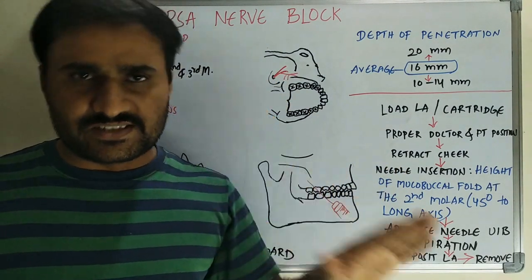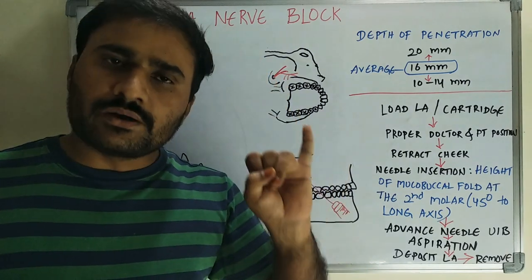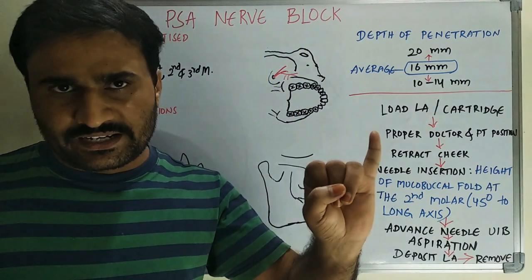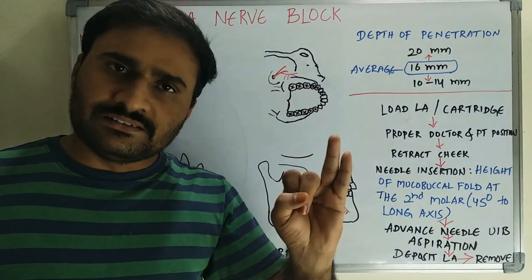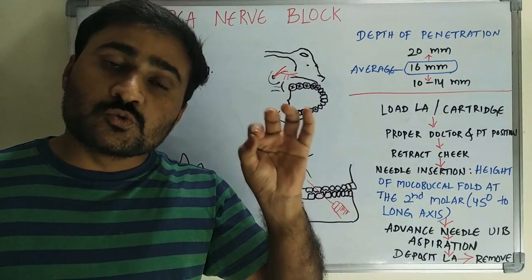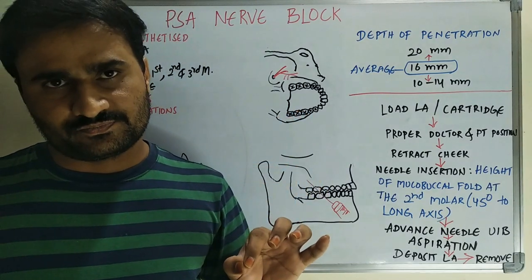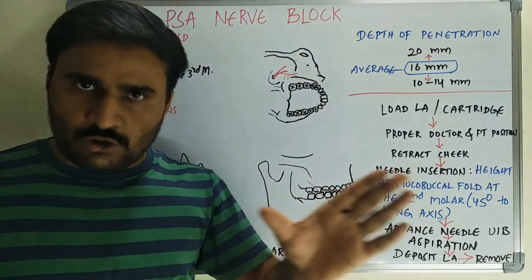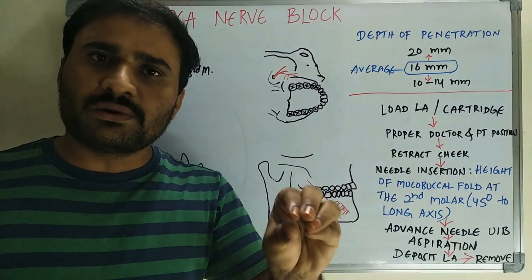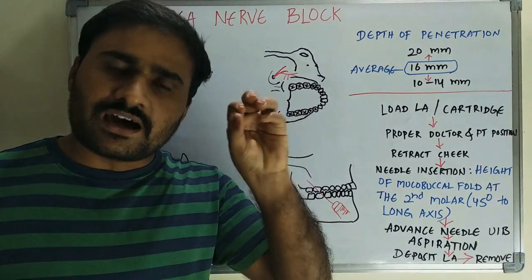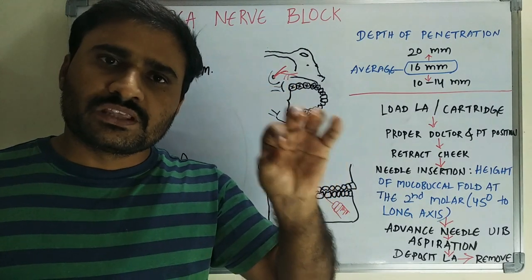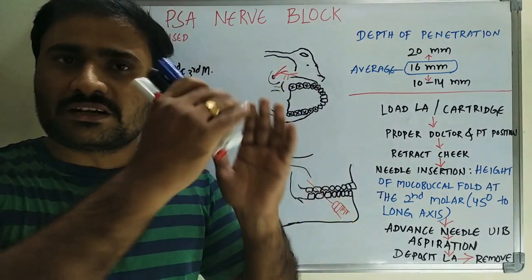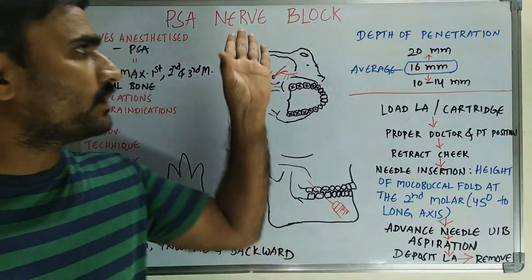The indication for a nerve block is when you want to perform a procedure on more than two teeth, and the second indication is when there is a contraindication to the supraperiosteal injection, like infiltration. In those cases you will go for a nerve block. Contraindication is when there is infection or abscess formation in the supraperiosteal region or at the root apices of the tooth.